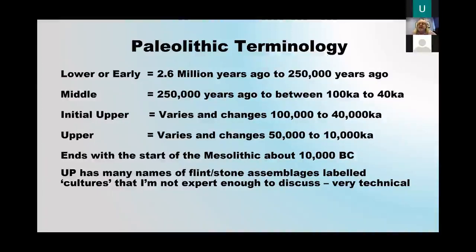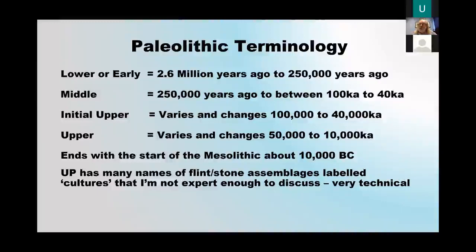Effectively, the Lower/Early is really when you're talking about precursors of modern human beings. The Middle is where you're beginning to get what you'd call modern human beings in looks and DNA, but perhaps not at a cognitive level. The initial Paleolithic is where you start to see symbolism. And then the Upper Paleolithic — which I'm concentrating on — is the time when people have said there's almost a revolution. I'm not expert enough to discuss the various types of flint and cultures, so I hope you'll forgive me.